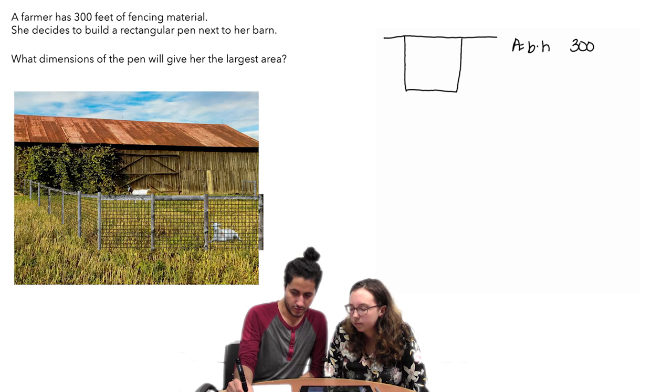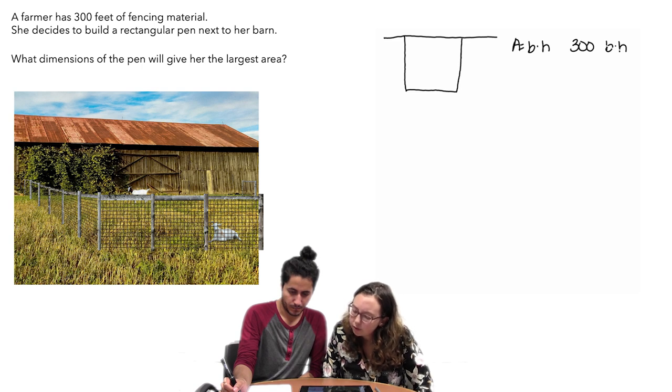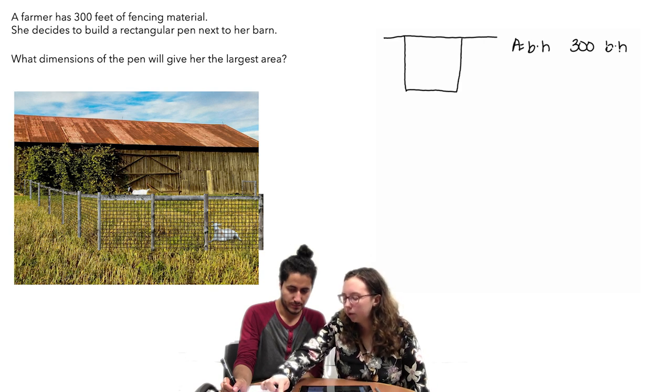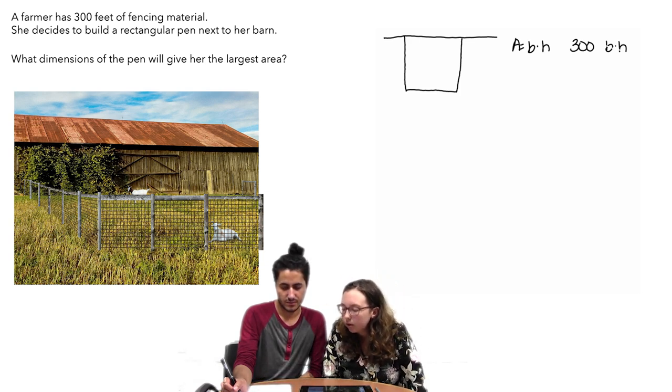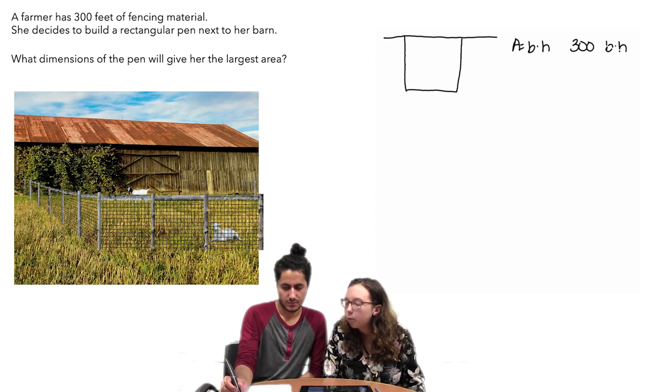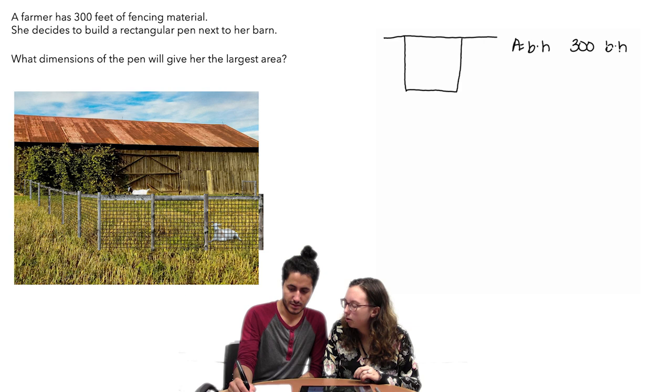Do you have 300 equals base times height? I don't think so. If it's 300 feet of fence, we're not filling this area with fence. We're going around with fence. I don't think we'd set our area equal to 300. It's just equal to base times height. Because we want to find the largest area. If we set area equal to 300, that doesn't really help us at all. Okay, so I'm gonna cross this out.